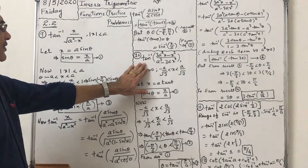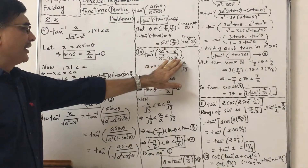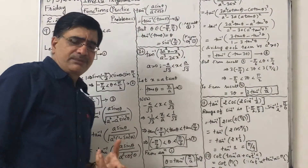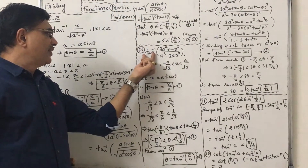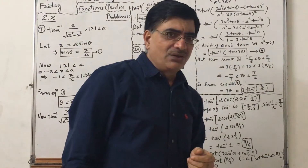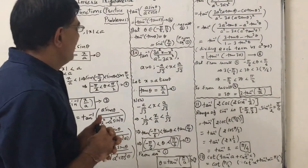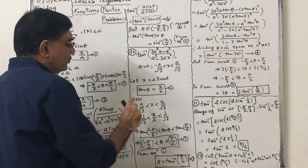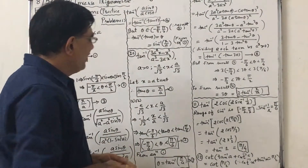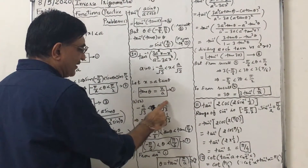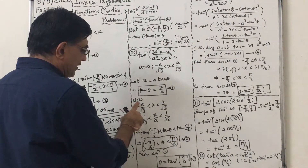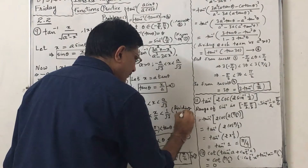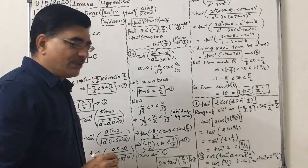Now the 10th problem. The expression is tan⁻¹((3a²x − x³) / (a³ − 3ax²)). A is positive, and this is the condition. We can easily assume — since this is tan⁻¹ and these terms remind us of the formula for tan 3θ — let us assume x as a tan θ. So tan θ = x/a. I have to prove that θ is in the range of tan⁻¹. The condition given is: minus a/√3 less than x less than a/√3. Dividing by a (which is positive), we cannot divide by 0, so a is positive.